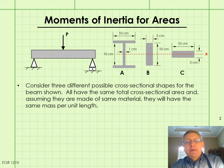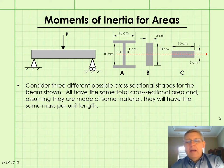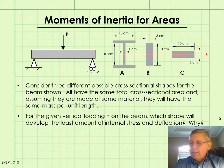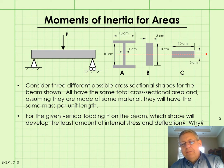Consider three different possible cross-sectional shapes A, B, and C for the beam shown. All of these shapes have the same total cross-sectional area, as you can confirm from the dimensions shown in the figure. Assuming they are made of the same material, they will have the same mass per unit length. For the given vertical loading P on the beam, which of these shapes will develop the least amount of internal stress and deflection, and why?